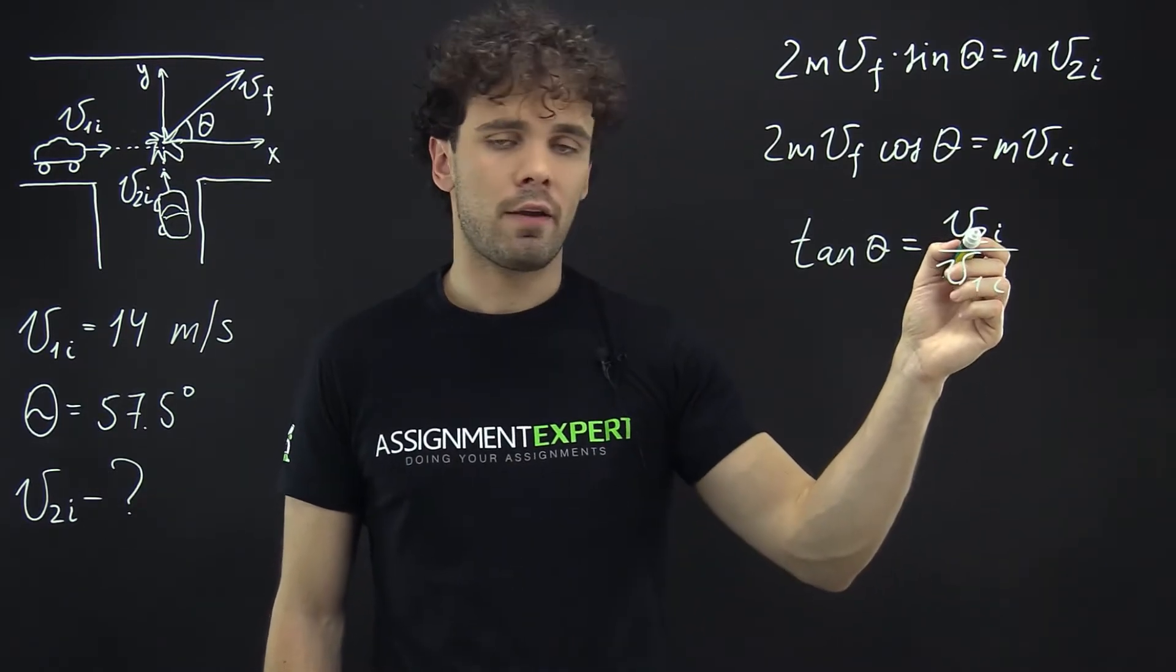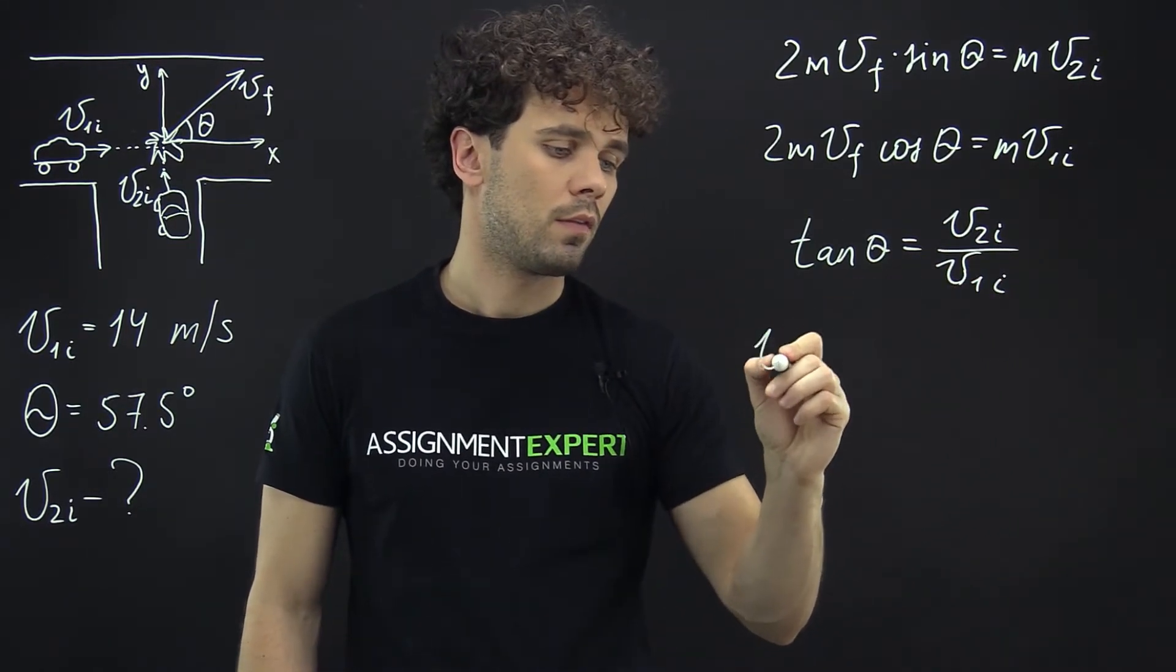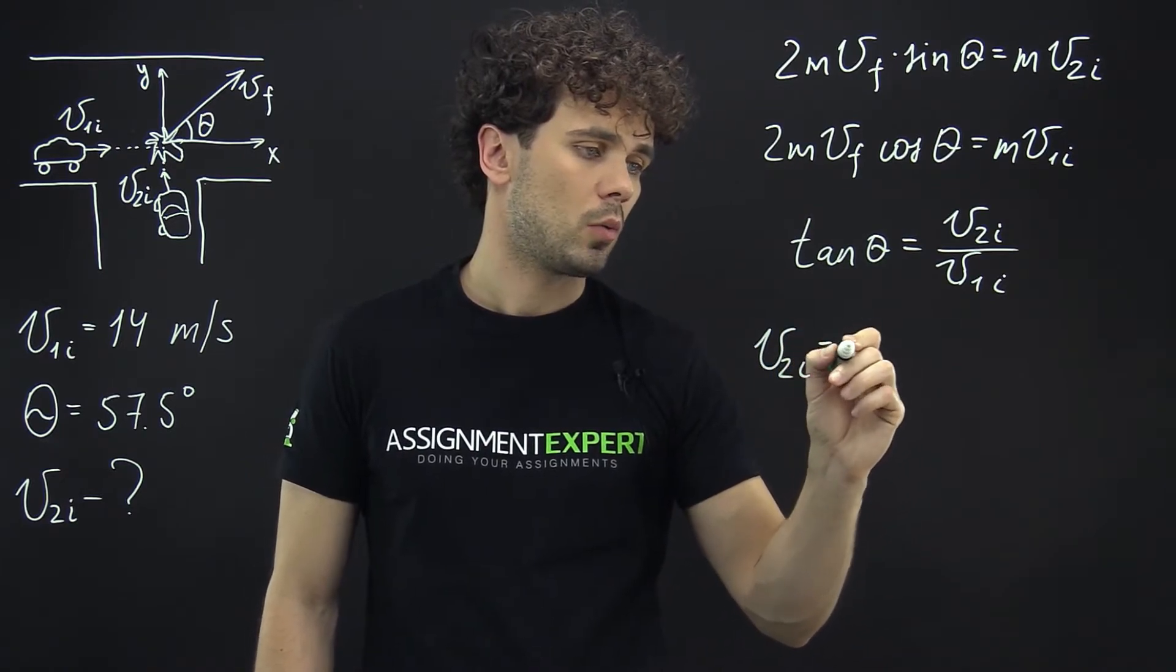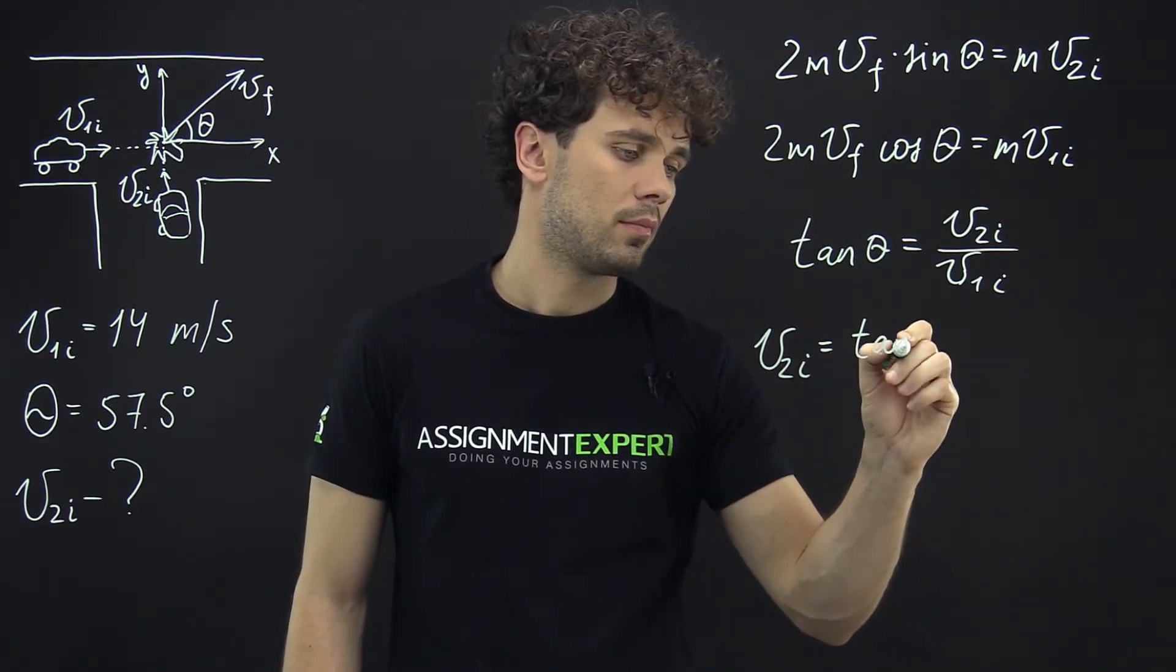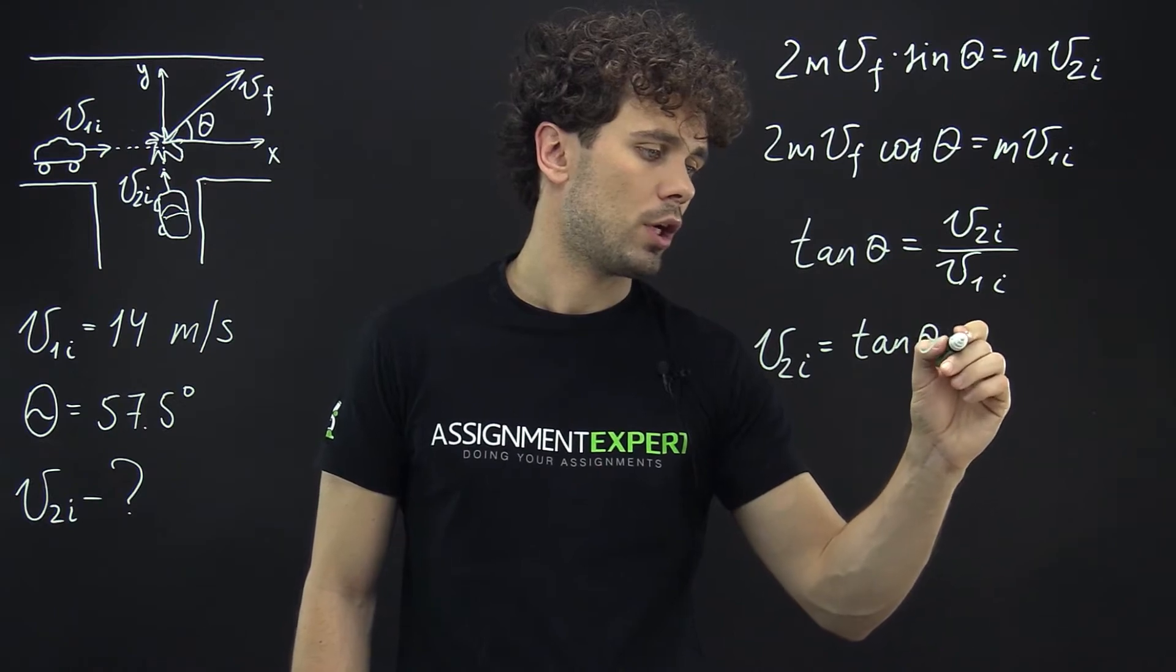And from here we can derive the speed of the second car, V2i equals tangent of theta times V1i.